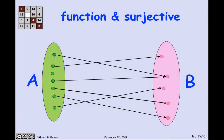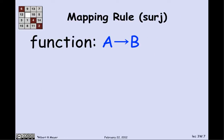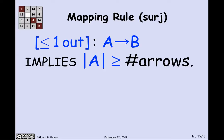There are more counting rules, like the bijection rule, that relate sizes of sets by inequalities according to whether mappings are surjective or injective. Suppose there's a surjective function from A to B. That means there's at most one arrow out of every element of A — that's what function means — and at least one arrow into every element of B — that's what surjective means. So the size of A must be greater than or equal to the number of arrows, since there's at most one arrow out per element.